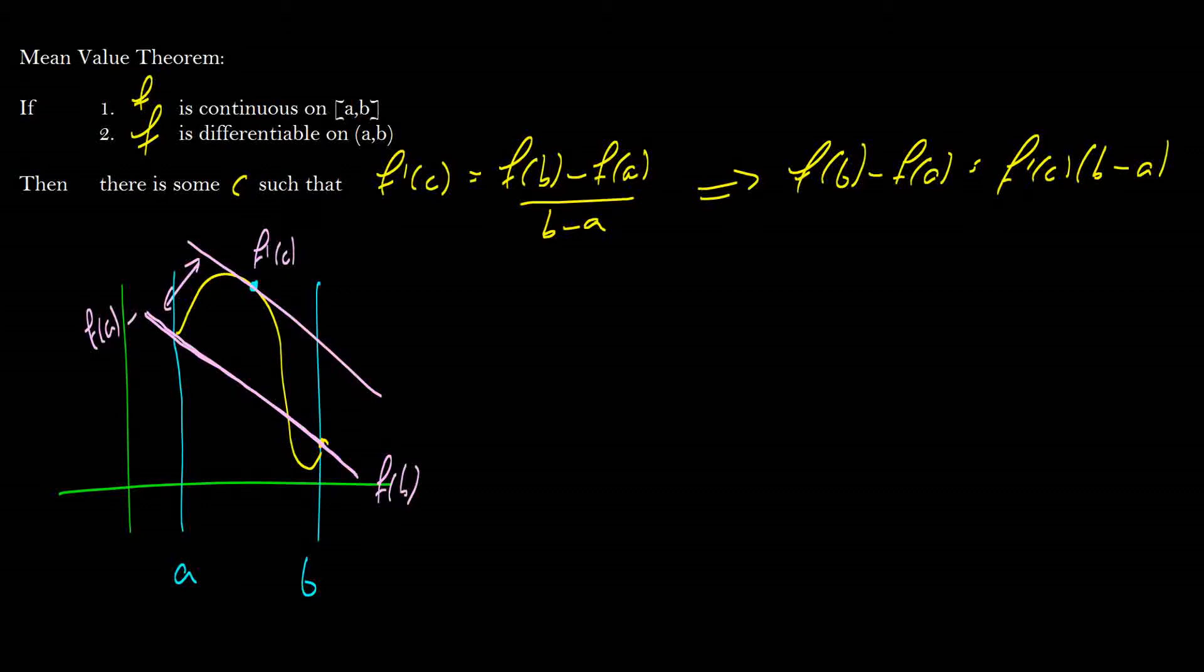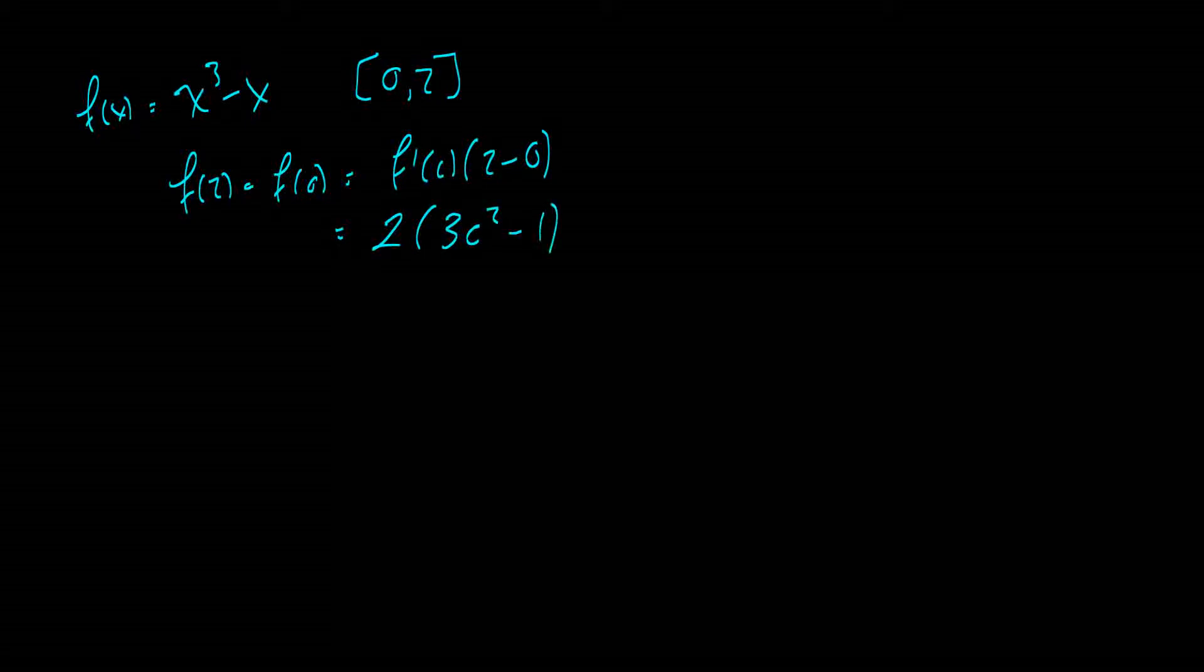So here's what we're going to do. We're going to do one little question here, and we're going to say okay well f of x is equal to x cubed minus x and we're going to look on the interval 0, 2. So if we take a look at our formula f of 2 minus f of 0 is going to be equal to f prime of c times 2 minus 0. So this is 2 times f prime of c, which is going to be 3 c squared minus 1. f of 2 is going to be 8 minus 2 minus f of 0, which is 0.